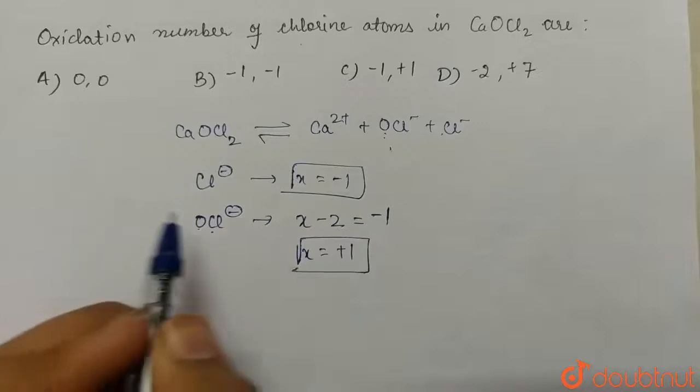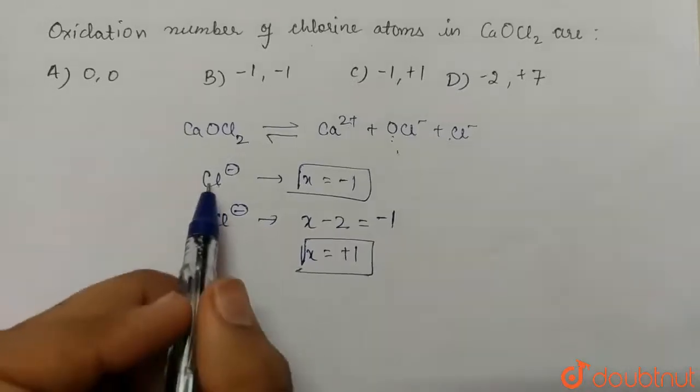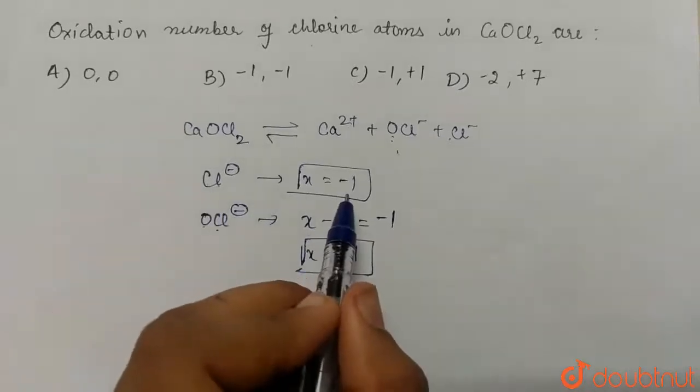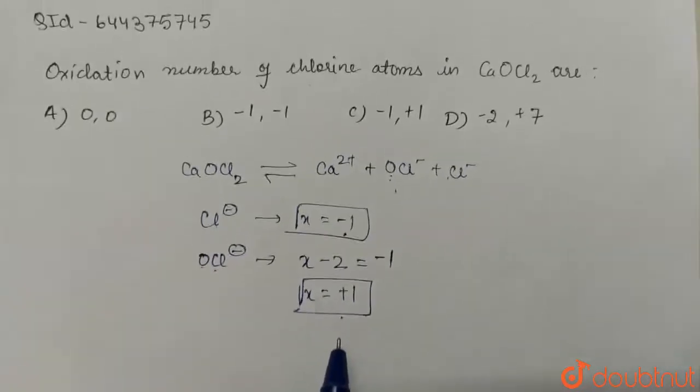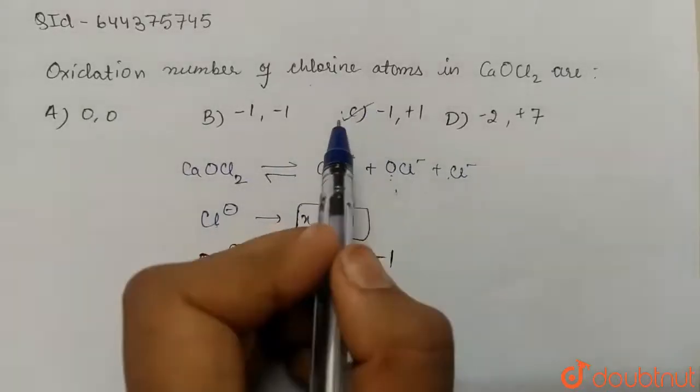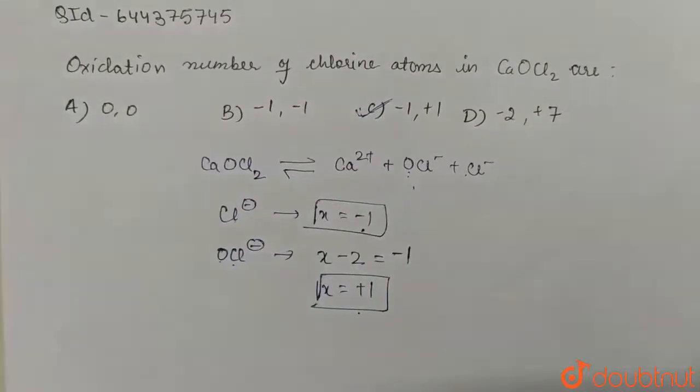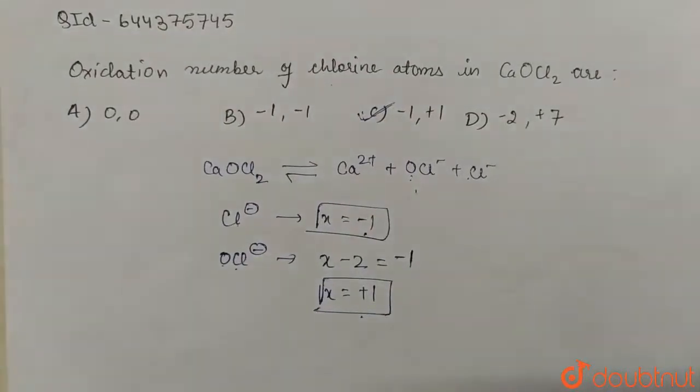So here we have two chlorine atoms, one has oxidation state minus one and other has oxidation state of plus one. So our answer will be C. I hope you understood the question, do practice this question, thank you.